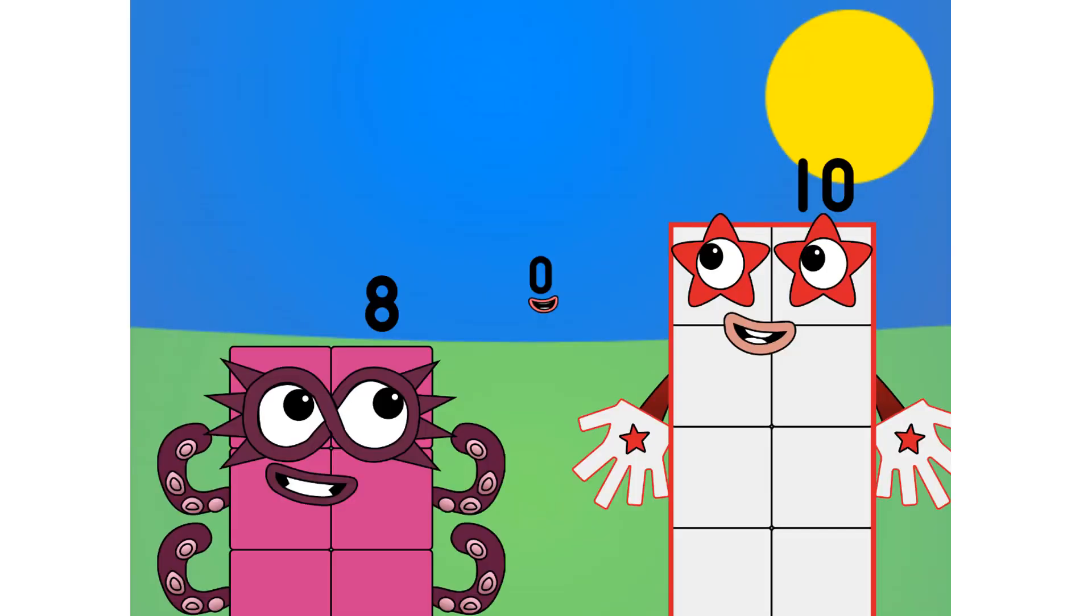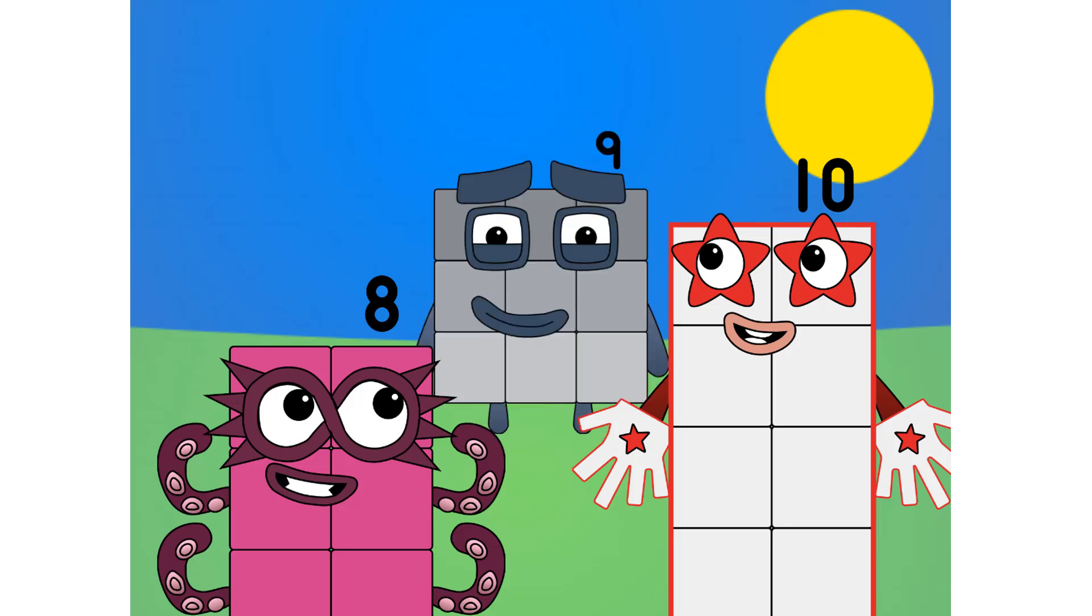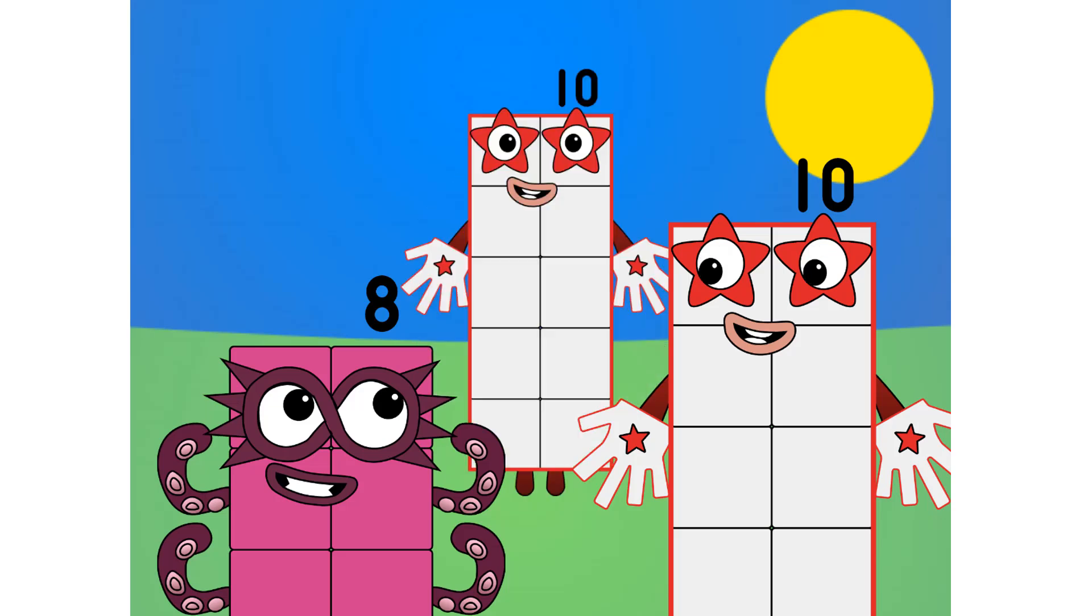Eight, do you know why we count up to 10? No. Well, the main reason why we count to 10 is because humans have 10 fingers. 5 on each of their 2 hands. 1, 2, 3, 4, 5, 6, 7, 8, 9, 10. See? 10 numbers, 10 fingers.